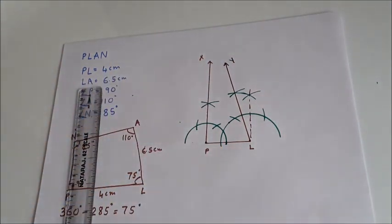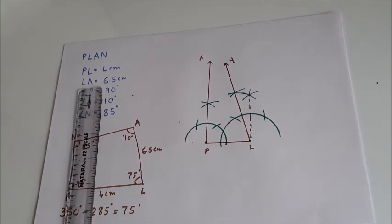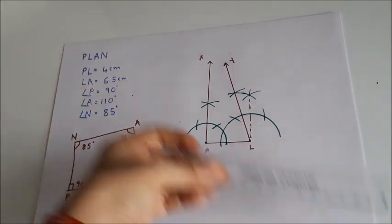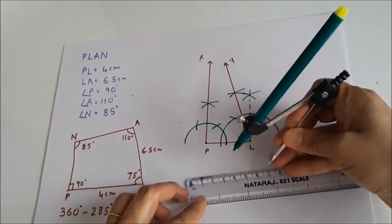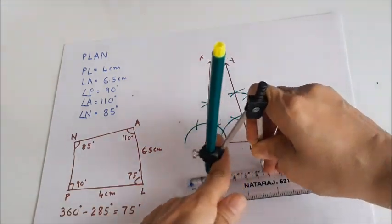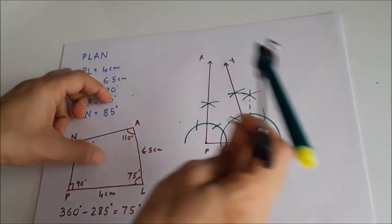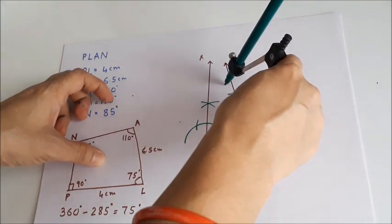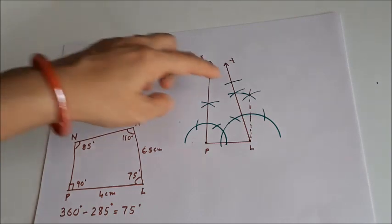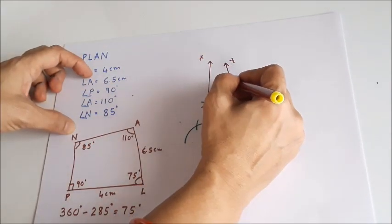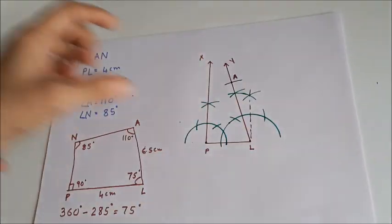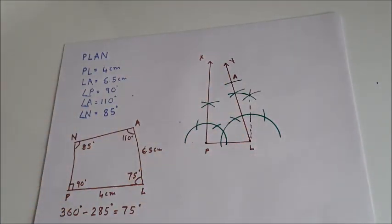Now we know that LA is 6.5 centimetres. I take my scale, set the compass to 6.5 centimetres, and from L I cut off the arc on ray LY. Where this arc cuts the ray will be point A, which is 6.5 centimetres from L.